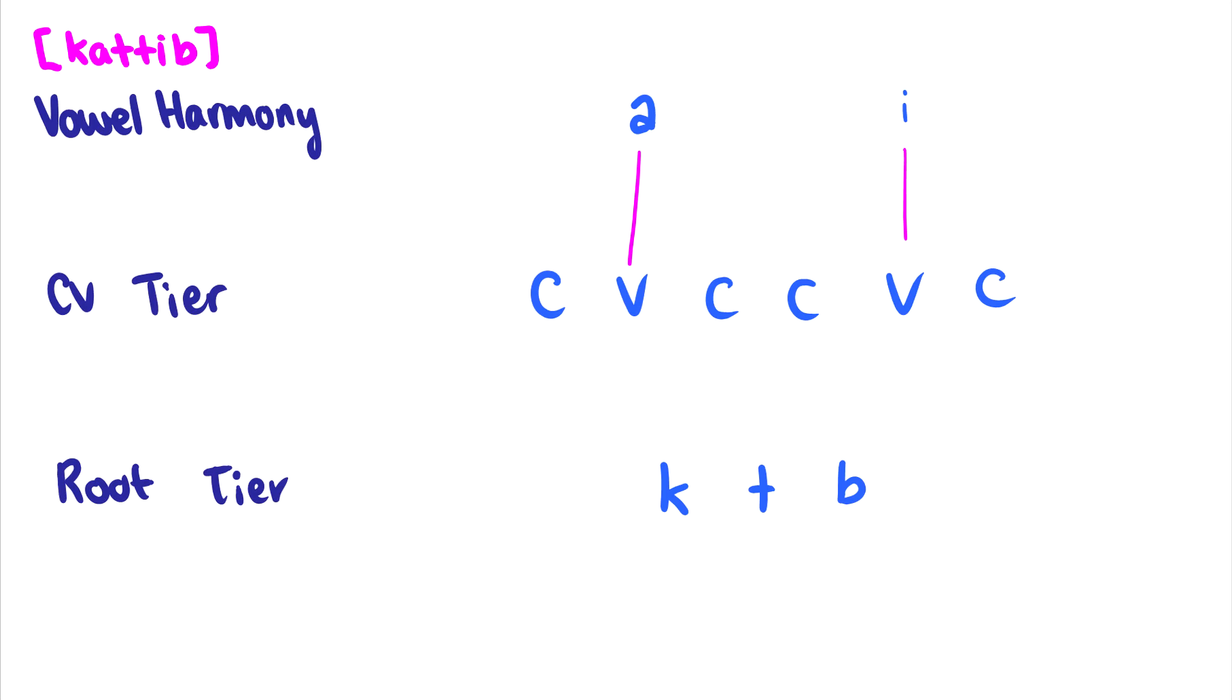Now with the root tier, we attach the k to the first consonant. The next consonant that comes is essentially doubled. So it will attach to the two Cs. And then the final consonant b will attach to the final C. If this consonant b didn't exist, then the t would spread as well to the C. But of course, we have the b here for katib. Therefore, we will attach the b to the final consonant. And then we get our word katib.